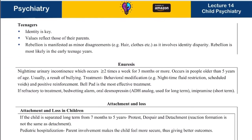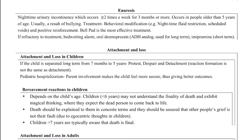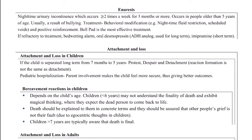For teenagers, identity is key. Their values reflect those of their parents, which is why schools may say 'this shows how your parents behave.' Rebellion manifests as minor disagreements — for example, a child goes to school having styled their hair the way they want despite the mother's objection. This is more common in early teenage years when children think parents are wrong about everything.